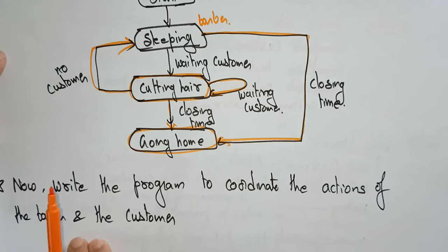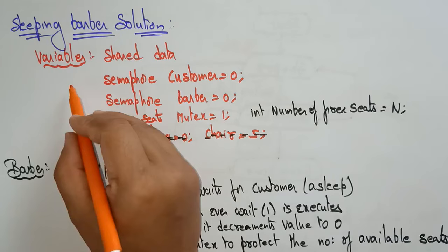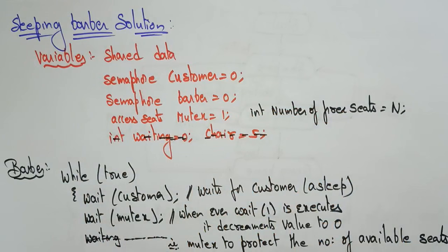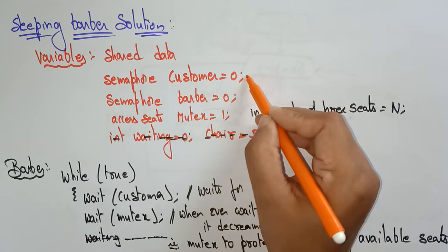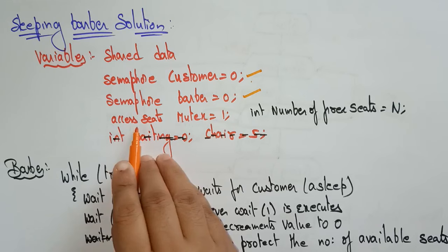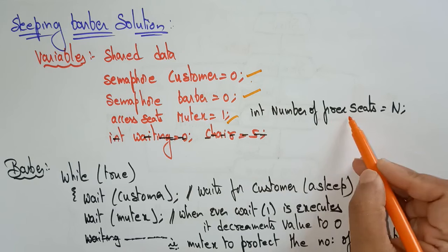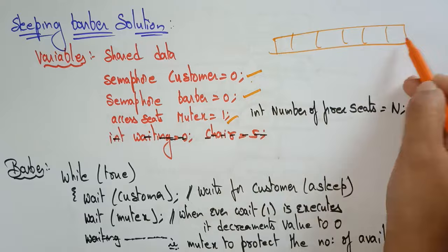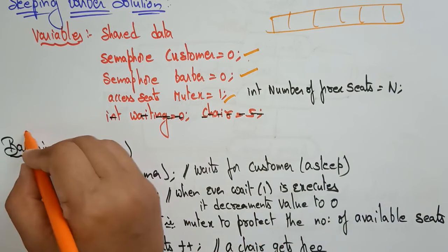Now let's look at the program for the Sleeping Barber Solution. I'm using shared data because there is only one barber and one barber chair. I declare a semaphore 'customers' initialized to zero, and a semaphore 'barber' initialized to zero since he is sleeping. I take a mutex 'access_seats' initialized to one, and 'number_of_free_seats' initialized to N, since all N seats start as free.